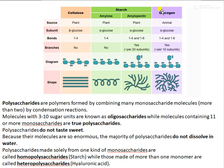Glycogen is another polysaccharide found in animals. It is made up of alpha-glucose subunits and is also a more branched structure, having both 1,4- and 1,6-glycosidic linkages.